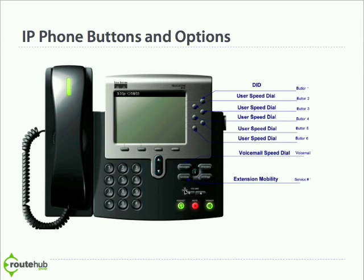These five buttons all have a unique purpose. The one in the middle is the help button — if you're not sure about a particular button on your phone, you can simply press the help button followed by any button on your phone, and it will give you information about how that button is used directly on the LCD screen.